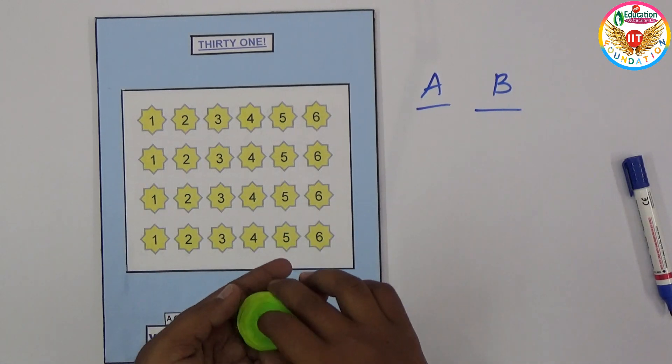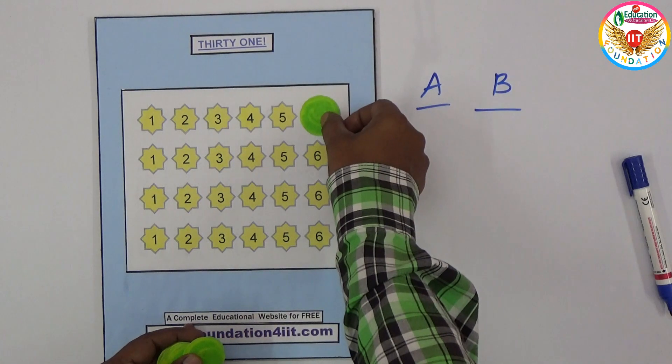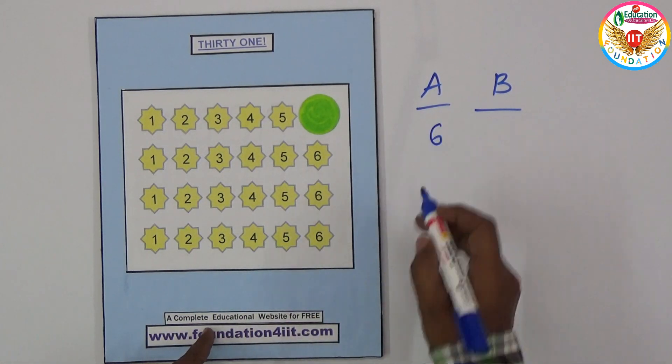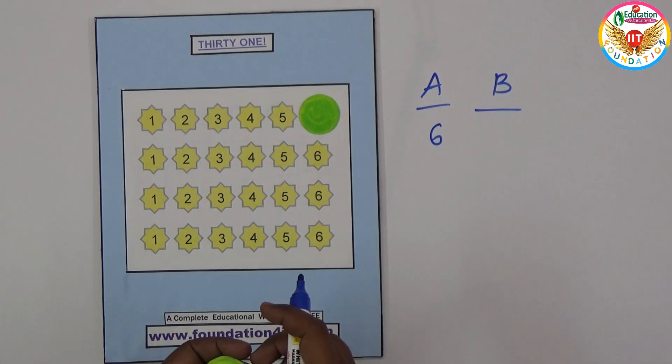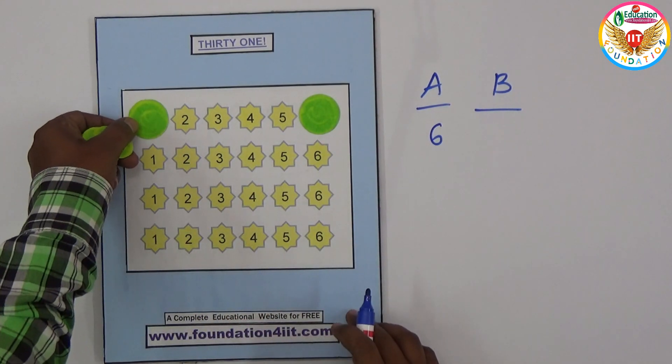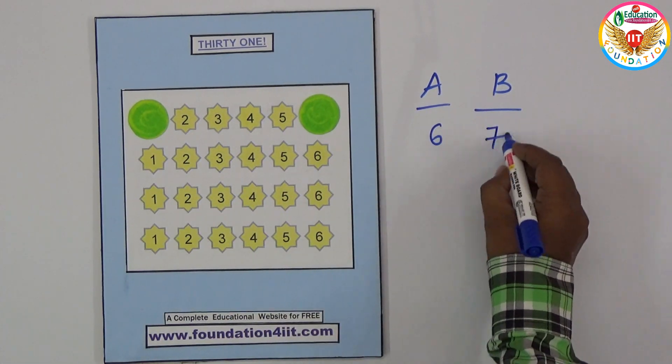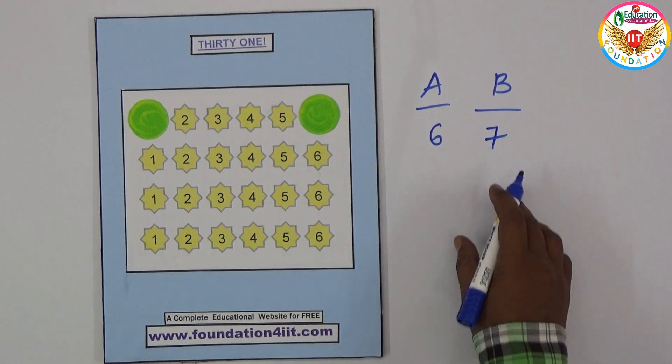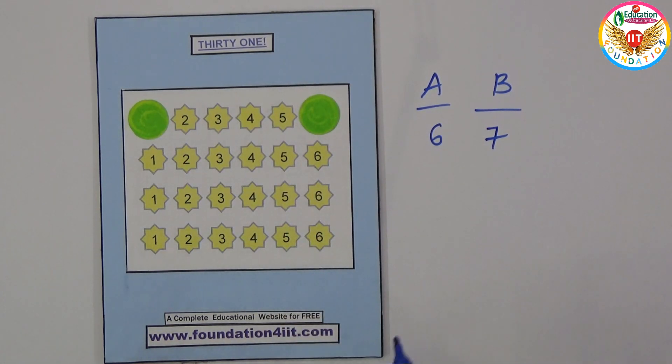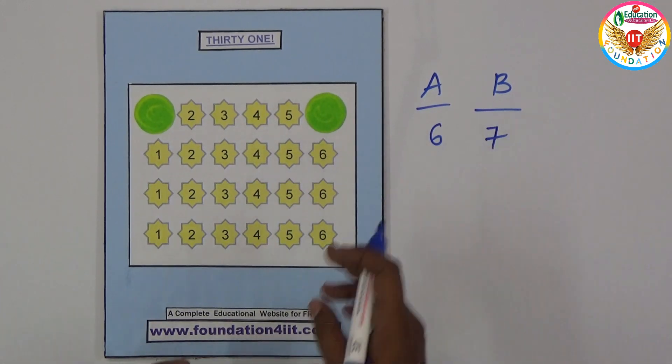Now for example, A kept at number 6, so we can write 6. And B, for example, kept at 1. One means previously six, so six plus one is seven. Like that, whoever makes 31 first is the winner. It's not simple or easy - some logic you can follow for this.